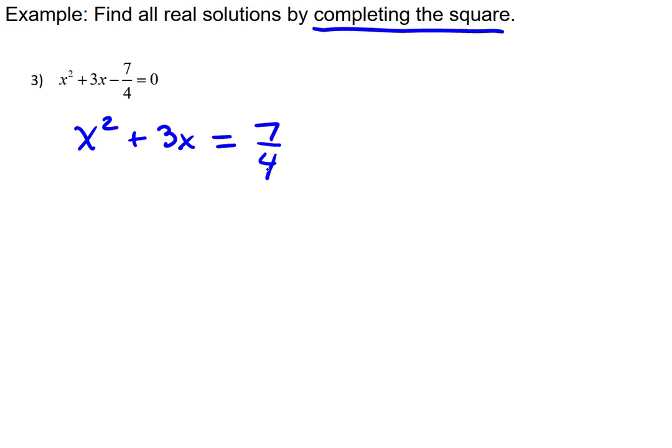Next, or actually interchangeably with that first step, would be to divide everything by the leading coefficient of the square variable, if it's not 1. But it is 1 because you don't see anything there. So there's nothing to do in that step.